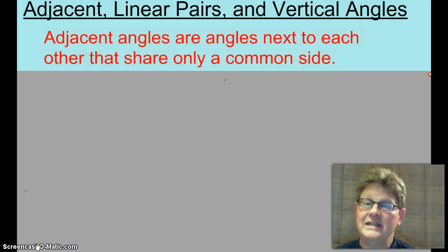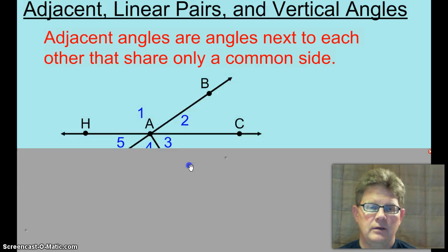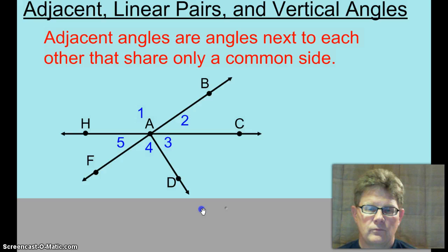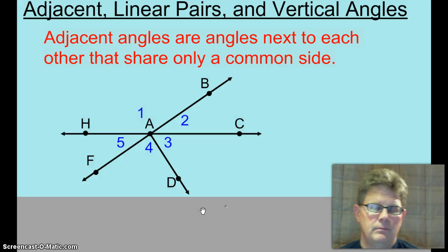Adjacent angles are angles next to each other that share only a common side. Okay, angle 1 right here and angle 2, they are adjacent angles. The side that they share is ray AB.